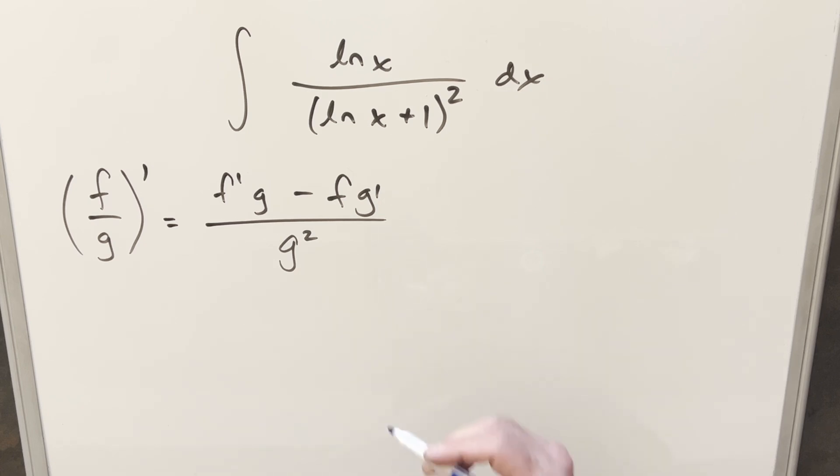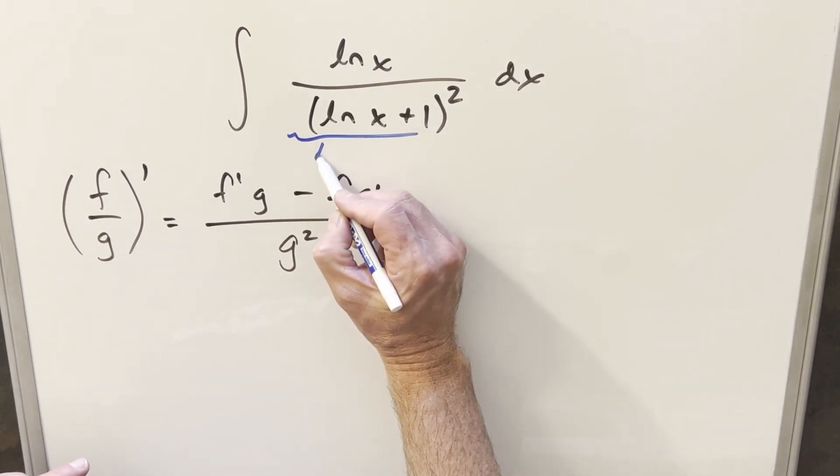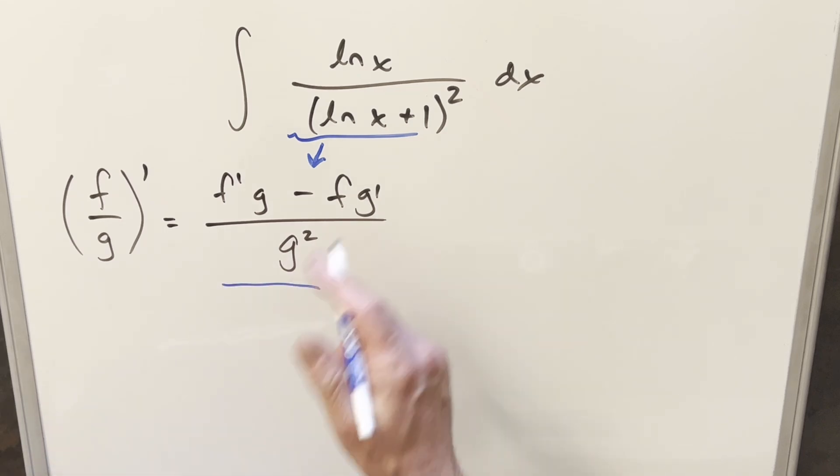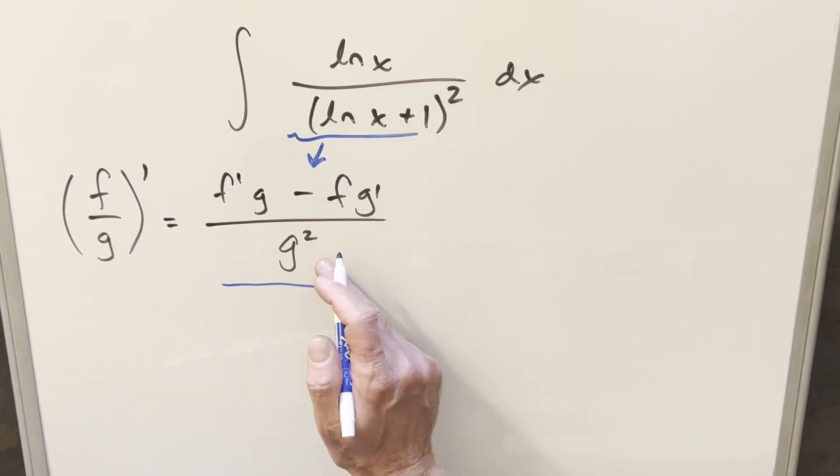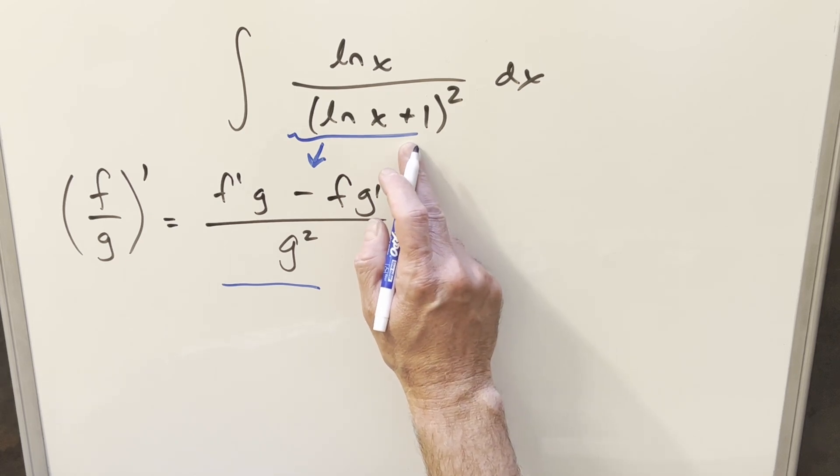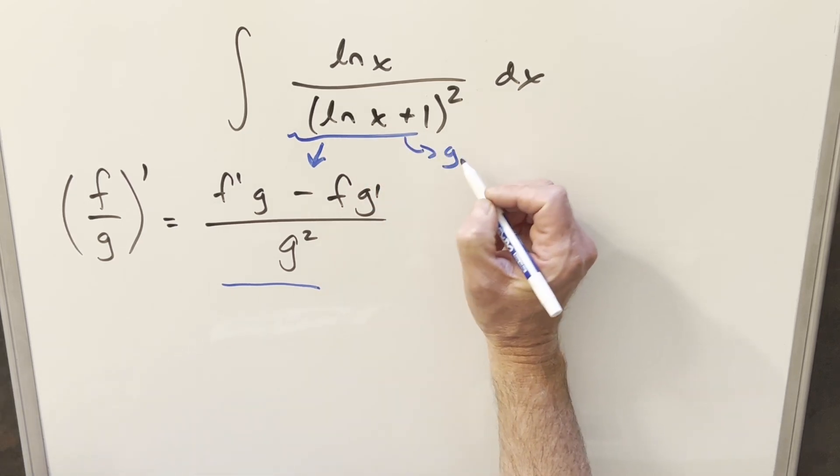In order for this to work nice, what I want is our integral to be in exactly this form. It's going to be hard to equate natural log x to all this stuff. But the reason I decided to use reverse quotient rule is because I want this piece right here to be our g.